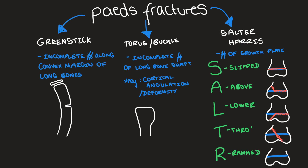Lastly, type 5, R for rammed, is a fracture through the growth plate in which there is impaction, and this is quite a serious injury.